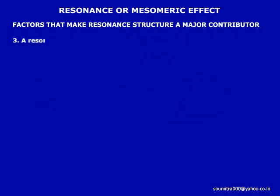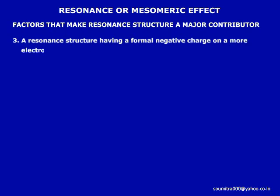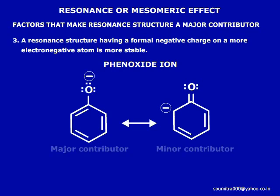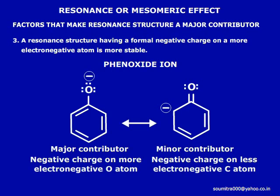Point number three: a resonance structure having a formal negative charge on a more electronegative atom is more stable. For example, in the phenoxide ion, we have two structures. Structure two is less stable than structure one because in structure one, the formal negative charge is on oxygen, which is more electronegative than carbon.